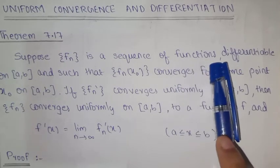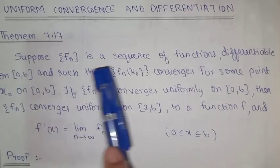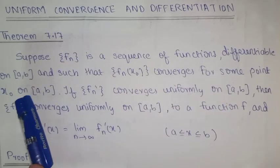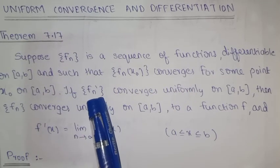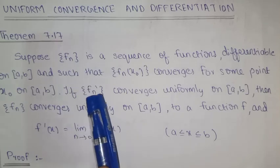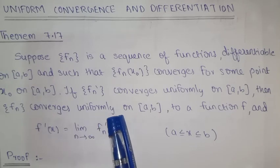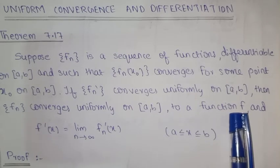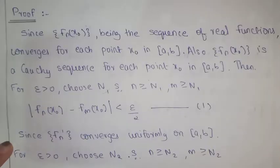This is the chapter on Functions and Sequences. The sequence fn will be differentiable on closed interval [a, b], and fn(x0) converges at some point x0 in [a, b]. If fn' converges uniformly on [a, b], then fn converges uniformly on [a, b] to a function f, and f'(x) = lim(n→∞) fn'(x).